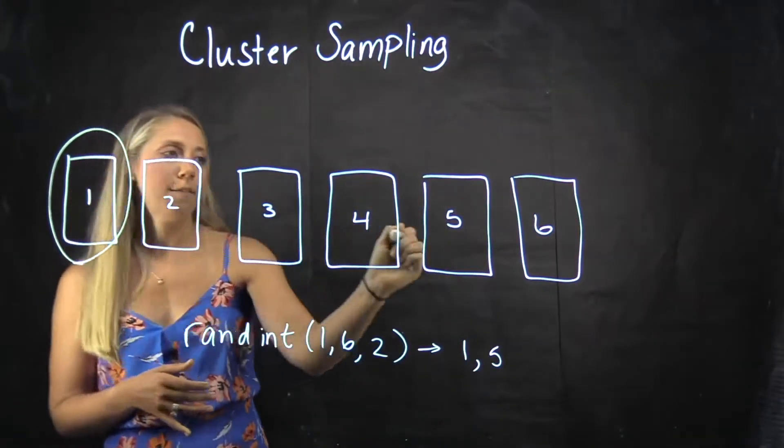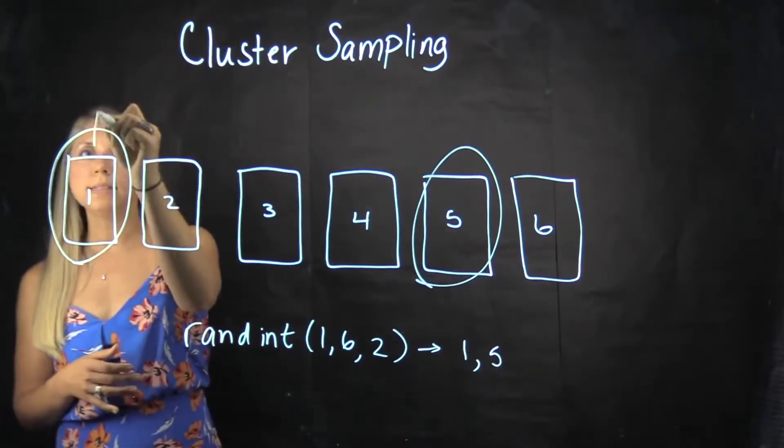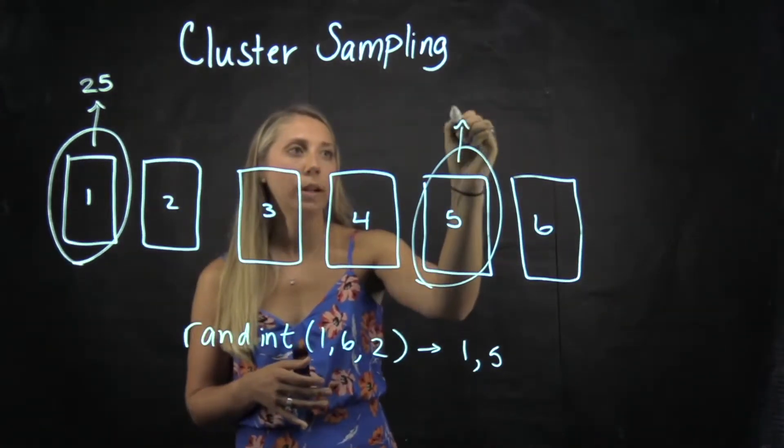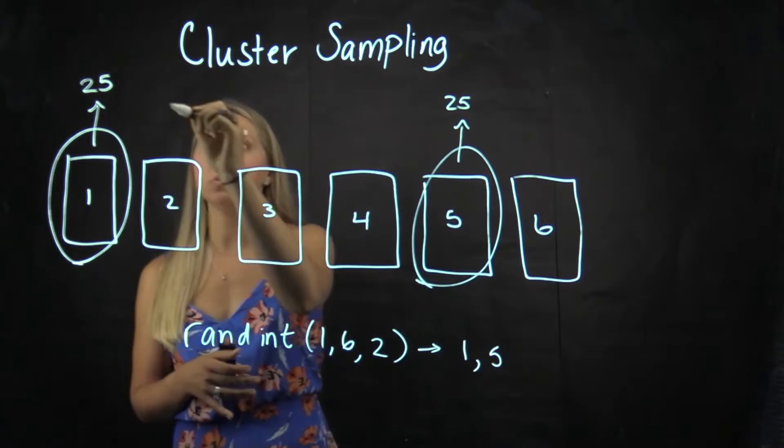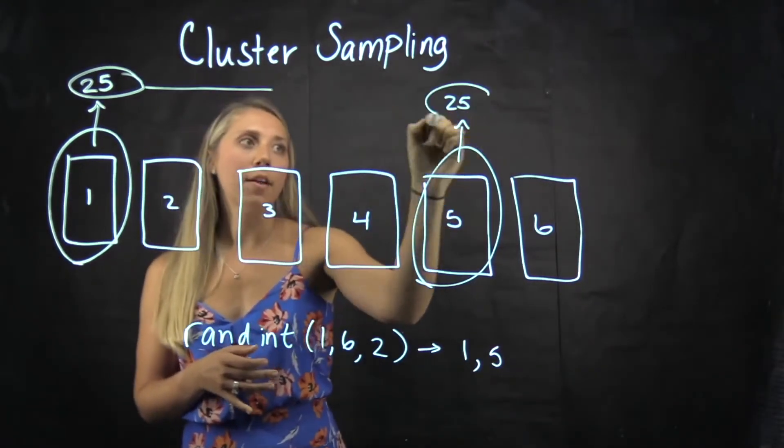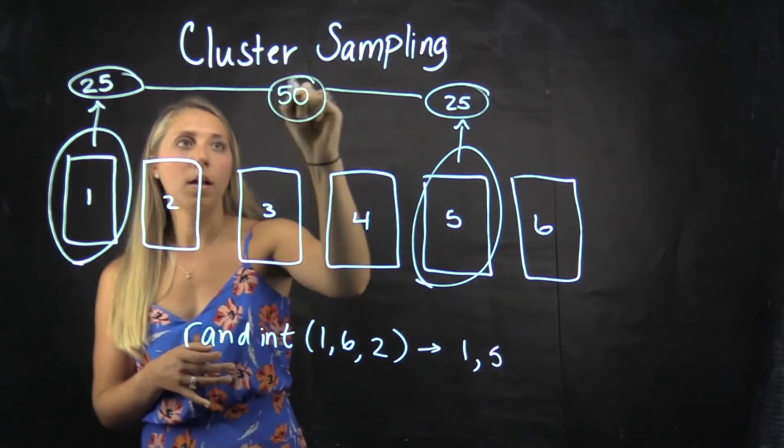So one and five are my chosen clusters. That means the 25 students in classroom one and the 25 students in classroom two are going to join together to make my complete sample of 50.